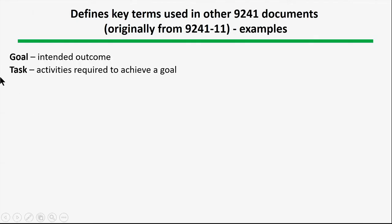Document 9241-210, like all of these documents, has definitions up front. The definitions primarily come from 9241 part 11. Two key terms used constantly in this literature are: 'goal,' which is the outcome that's intended, and 'task.' A task is a goal plus the activities required to achieve it, commonly referred to as the method.